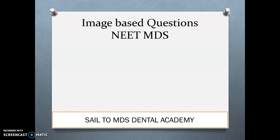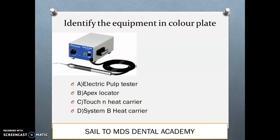Now we will deal with image-based questions, which make up 10 to 15 percent of your question paper. The first question asks you to identify the equipment in the color plate. The four options are: electric pulp tester, apex locator, touch and heat carrier, and System B heat carrier.